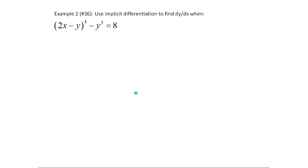Let's look at another one — this one's a little more complicated. When I look at this, the first thing I see is that we have a composite function as the first term. We have (2x - y) inside raised to the fourth power, so I have to apply the chain rule. Once again, I'm finding dy/dx, meaning I'm finding y prime, so I'm going to take the derivative of each term — the derivative of both sides, d/dx.